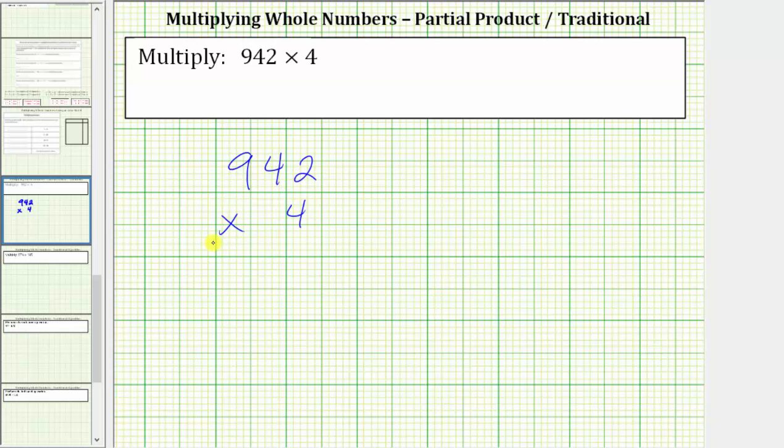Before we determine the product using a traditional algorithm, let's determine the product using partial products. To do this, it's helpful to write 942 in expanded form, which is 900 plus 40 plus two. Let's put this in parentheses, and then we have times four.